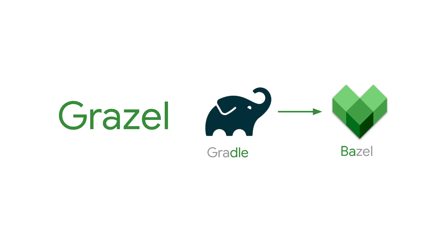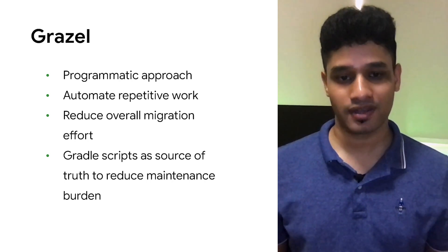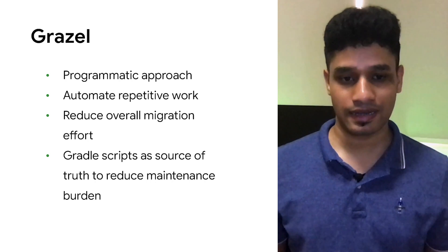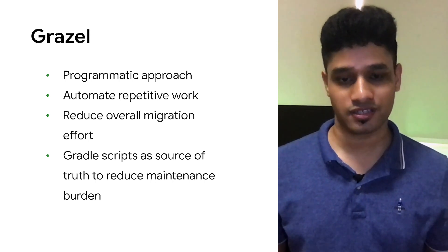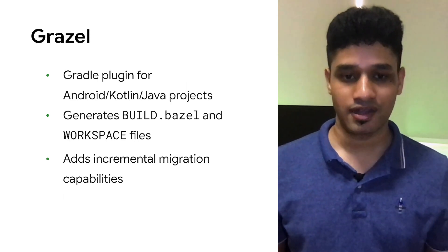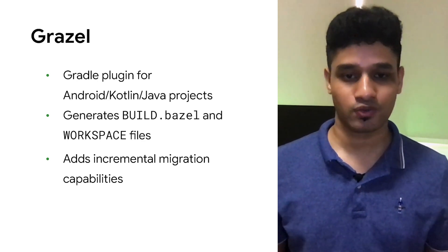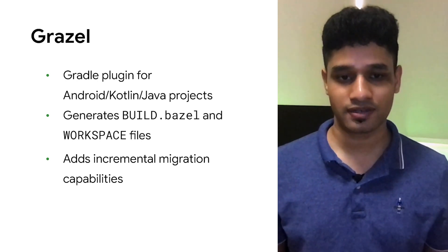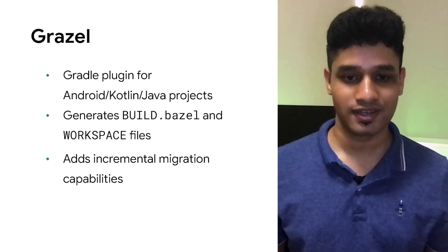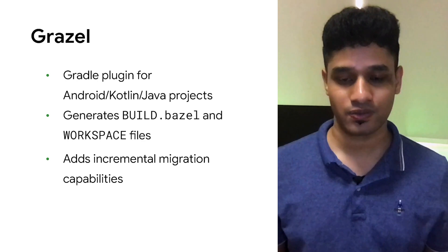Grazel stands for Gradle to Bazel. Today, I am really excited to talk about the architecture, the functionality, and the design decisions we took to build the plugin and how it has helped Grab so far. Grazel is the core of our migration strategy and helps us in reducing the overall migration effort in a variety of ways. Firstly, it allows us to take a programmatic approach to migration, where the majority of manual and repetitive work can be automated. It allows us to keep Gradle scripts as a source of truth for build scripts, thereby reducing the maintenance effort when we have multiple build scripts. At its core, it is a Gradle plugin that works on any Android, Kotlin, or Java codebase. When applied to a project, it registers a few tasks that can generate valid build.bazel and workspace files. And finally, it adds incremental migration capabilities to the project.